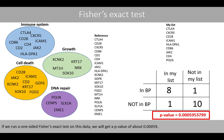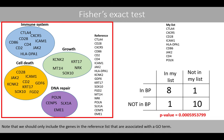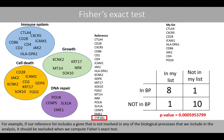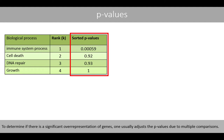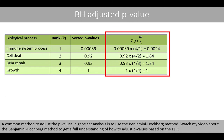If we run the one-sided Fisher's exact test on this data, we'll get a p-value of about 0.00059. Note that we should only include the genes in the reference list that are associated with the gene ontology term. For example, if our reference list includes a gene that is not involved in any of the biological processes included in the analysis, it should be excluded when we compute Fisher's exact test. Once we have computed Fisher's exact test for all four biological processes and sorted them based on the p-values, we'll have the following table. To determine if there is a significant overrepresentation of genes, one usually adjusts the p-values due to multiple comparisons. A common method to adjust the p-values in gene set analysis is to use the Benjamini-Hochberg method.